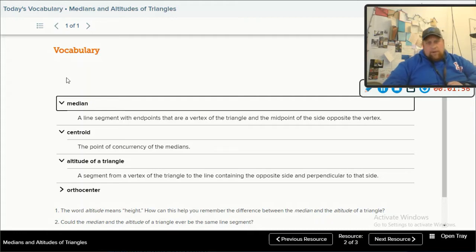Centroid is the point of concurrency of the medians. It's where the medians in the triangle meet at a single point, and then altitude of the triangle is a segment from a vertex of the triangle to the line containing the opposite side and perpendicular to that side. Boom. Pause this, write it down, and we're moving on.